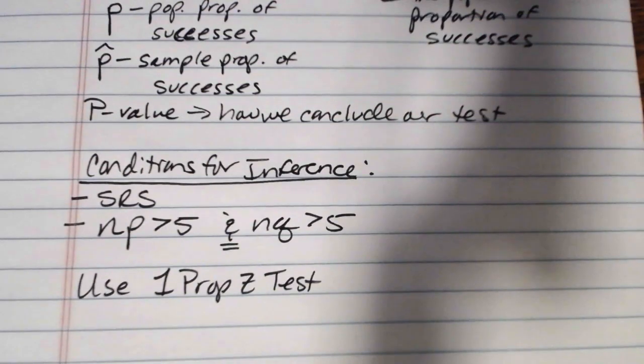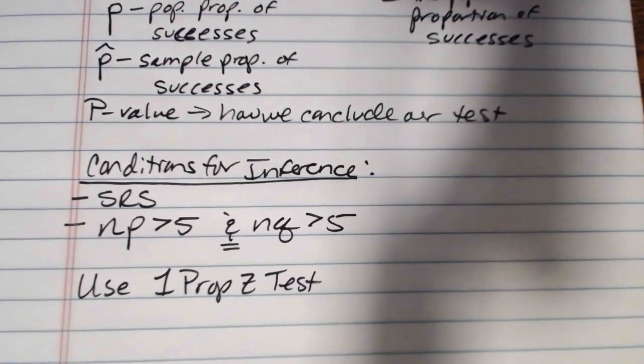We obtain the p value, then we compare the p value to the alpha level to determine what do we do with the null hypothesis - do we reject, do we fail to reject - and then we interpret the conclusion in the context of the problem. So those are all of our steps.